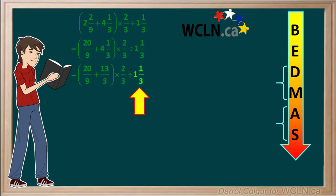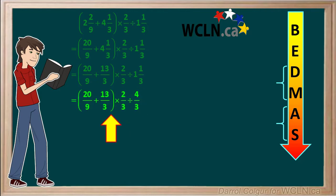Lastly, we'll convert 1 and 1 third to an improper fraction. It's equal to 4 thirds. So now we have this expression to solve.